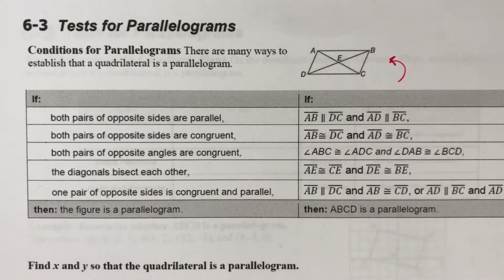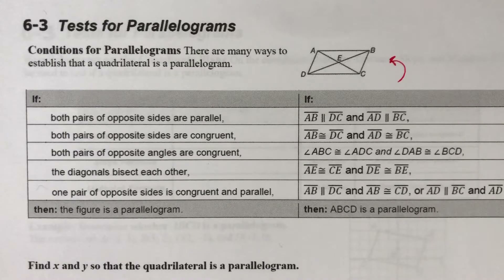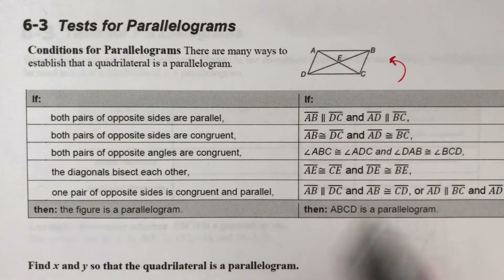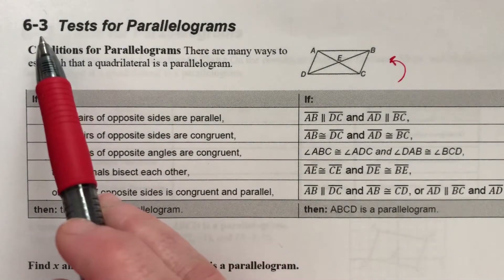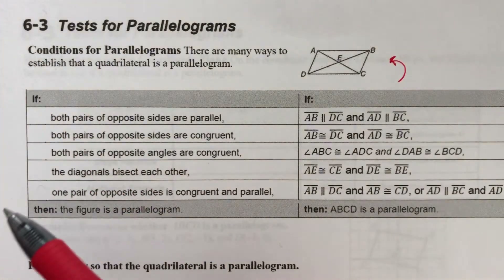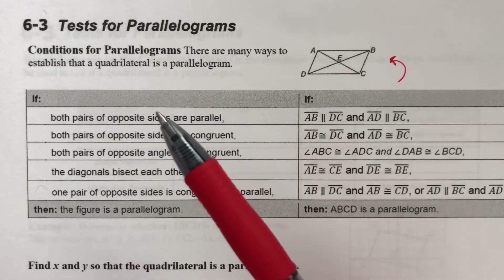This is lesson 6-3, Tests for Parallelograms. So far in chapter 6, we've talked about polygons, how to find the sum of all interior angles of any polygon no matter how many sides it has, how to find the measure of each interior angle for a regular polygon, and we talked about in lesson 6-2 what a parallelogram is and some properties of parallelograms. This lesson is really a continuation of 6-2 — it tests a four-sided polygon to see if it is in fact a parallelogram.